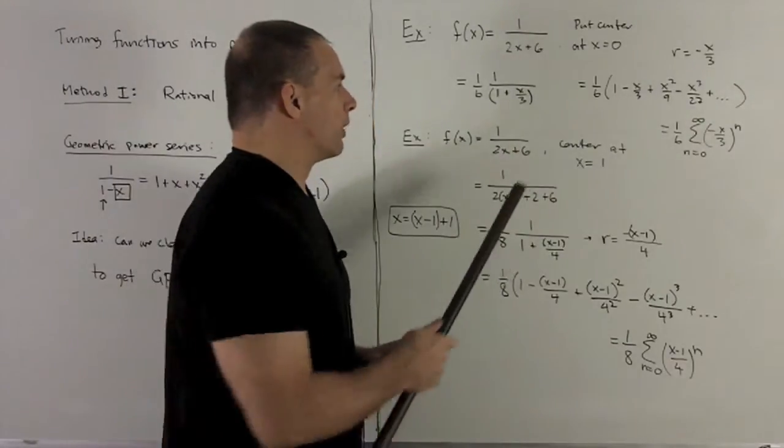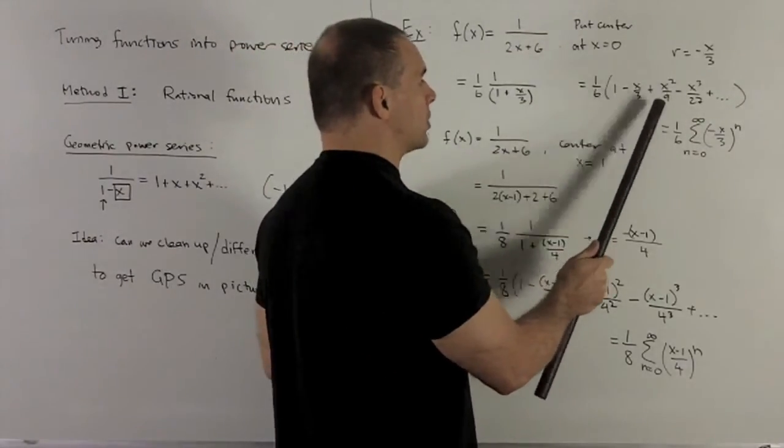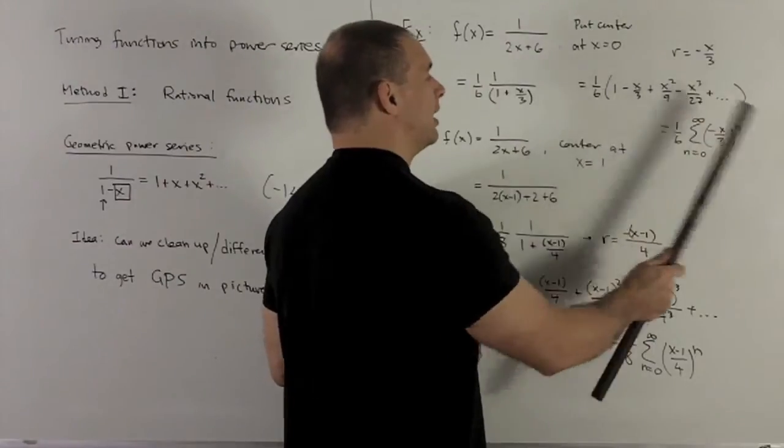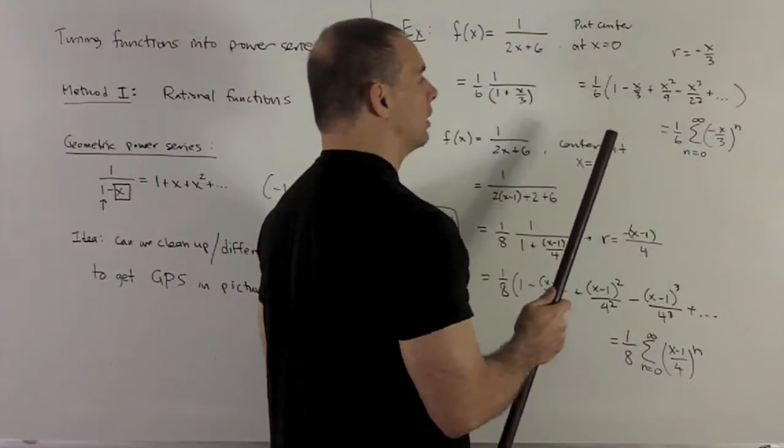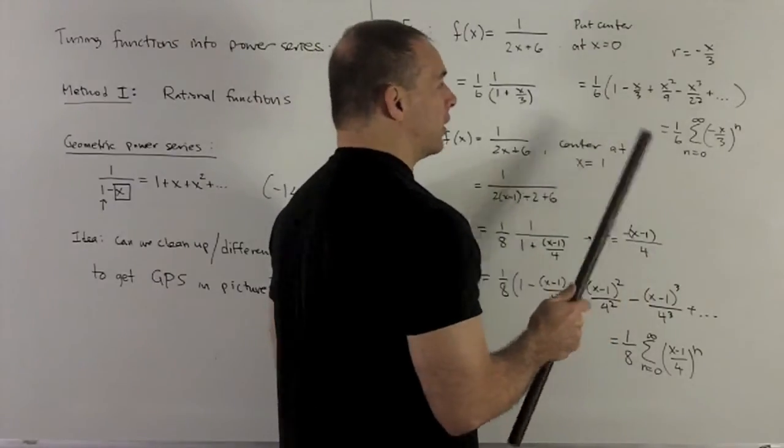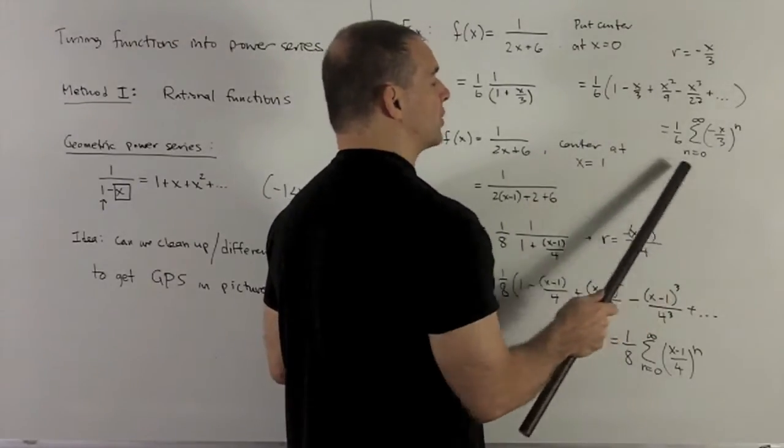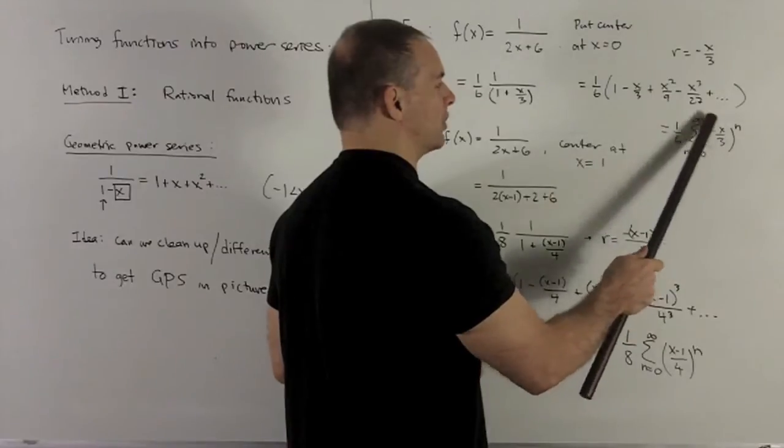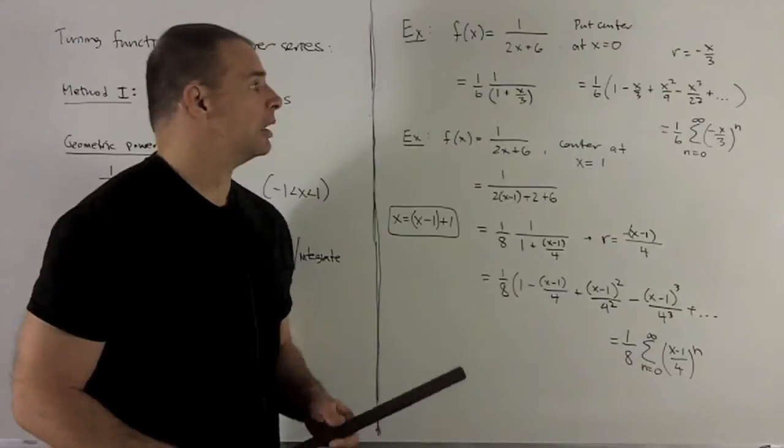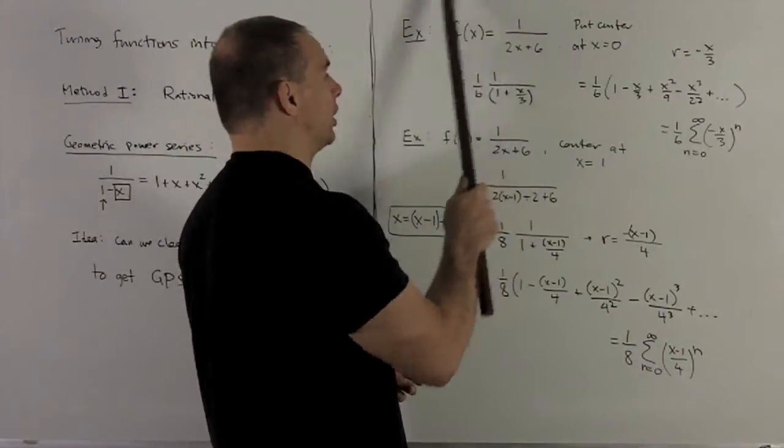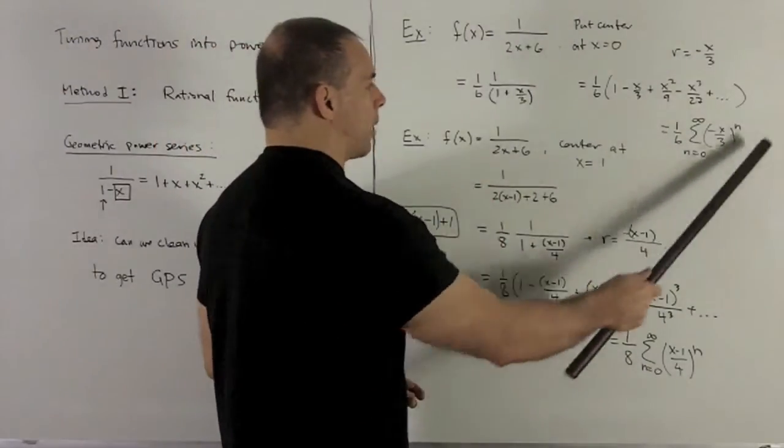So what are we going to get? We're going to have our 1/6, and it's going to be 1 plus box, plus box squared, plus box cubed, and so on. And I just dump my minus x over 3 in the box. That's going to give us this. And then in closed form, it looks like this, 1/6. And then we're taking whatever's in the box, raising it to the nth power, and goes from 0 to infinity. So that's going to represent this function as a power series.